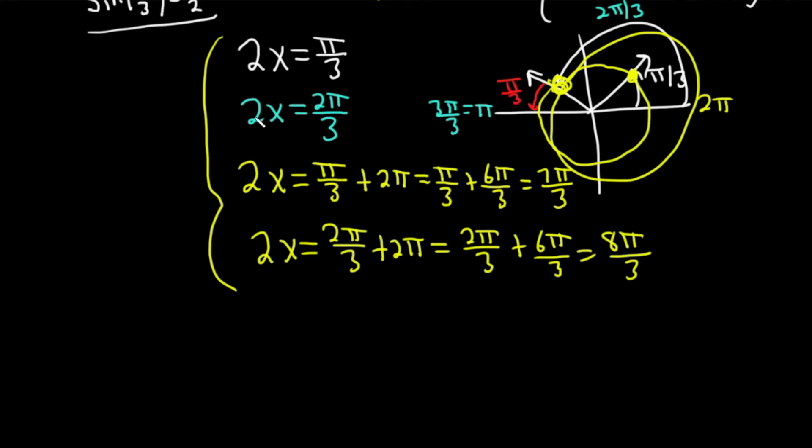So now we have to solve each of these equations for x. So in the first one here we have 2x equals π over 3. We can multiply both sides by 1 half. That gives us x equals π over 6. That's one of our final answers. I'm going to put that in a box because that's an accomplishment.